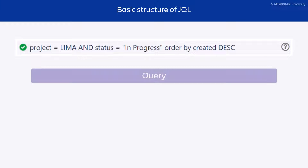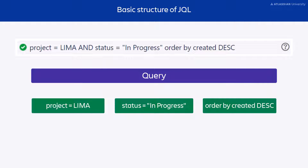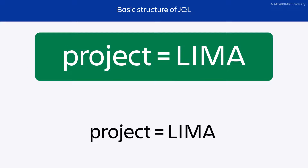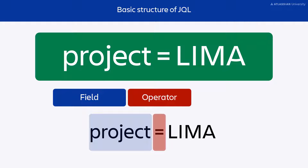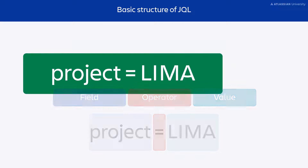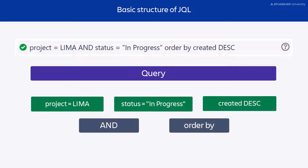This entire statement is called a query. A query is made up of multiple clauses, and these clauses define the issues you're searching for. Each clause is made up of multiple elements: a field — in this example, the field is Project; an operator — in this example, the operator is the equal sign; and a value — in this example, the value is Lima. In order to complete your Jira query, you must connect each of your clauses with keywords, such as AND and ORDER BY.